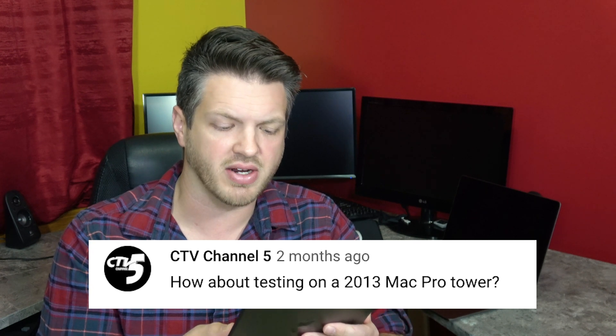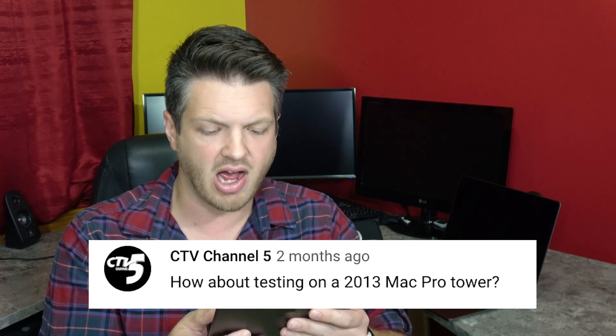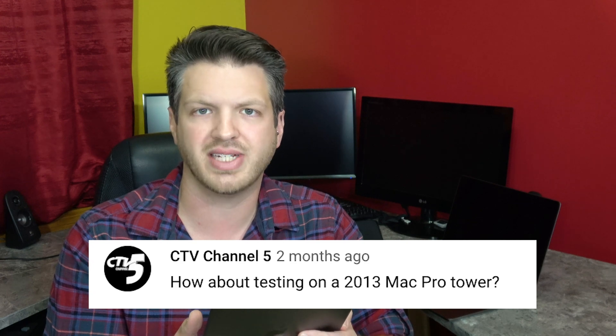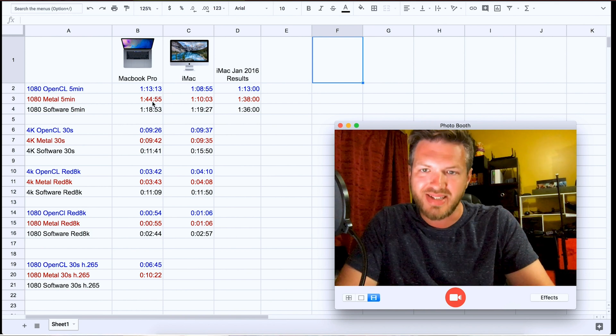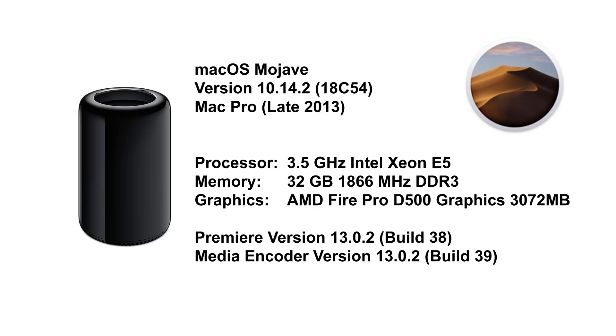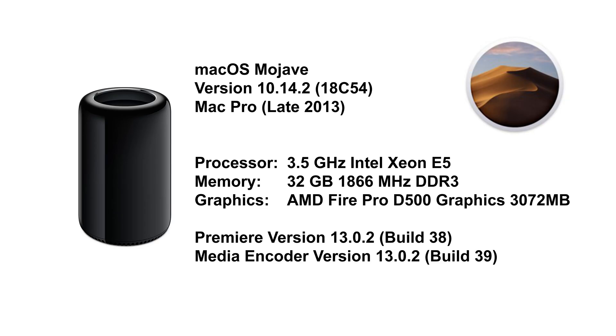First one up here is from CTV Channel 5, and they ask: how about testing on a 2013 Mac Pro Tower? They're referring to the Metal vs. OpenCL on Adobe Premiere set of videos that I've done. They wanted me to see how it handles on the old trash can style tower. I was finally able to get my hands on one. It's not the most powerful one, but it does have the Xeon and the Fire Pro. So let's look at those specs: it's running Mac OS Mojave version 10.14.2, Mac Pro late 2013. Processor is the 3.5 gigahertz Intel Xeon E5.